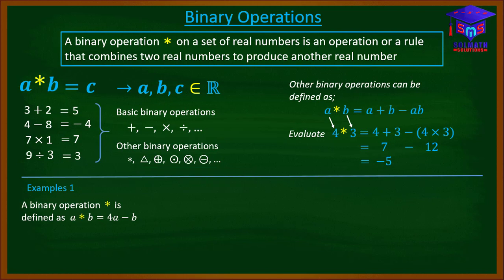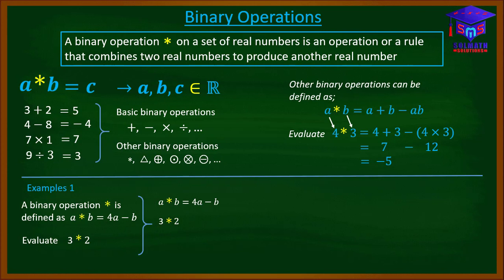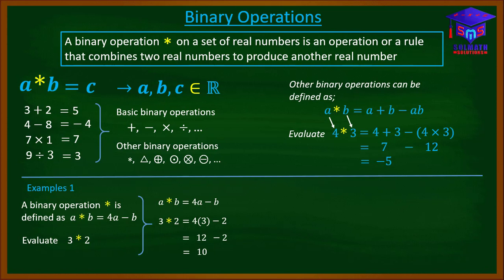Let's take an example. A binary operation star is defined as A star B is equal to four A minus B. Evaluate three star two. We relate A to three and B to two. So wherever we find A in the definition, we put three, and wherever we find B, we put two. This means multiply A by four then subtract B. After substitution, we get four times three minus two, which simplifies to twelve minus two, giving us ten. The binary operation is star.